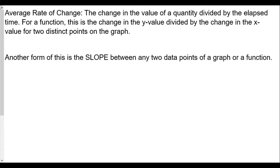So when you hear 'average rate of change,' you're really finding a slope, but you need two points on a function to compare them. If the function is linear, the slope is just given in the function itself. But a lot of times our functions will not be linear, so we want to look at the average rate of change, which may differ between any two given points based upon the shape of the graph.